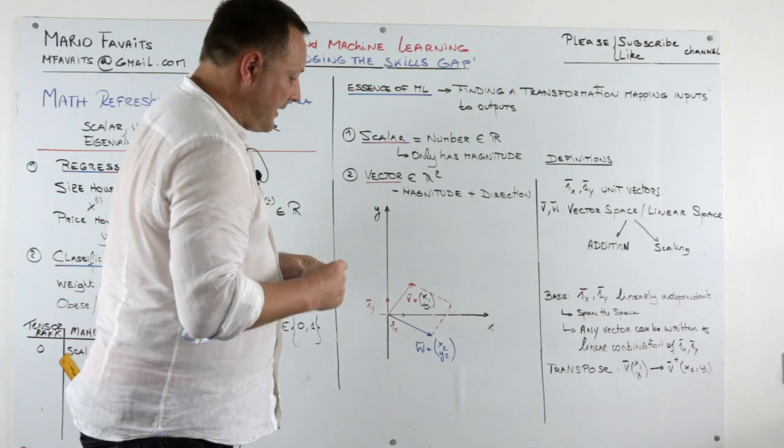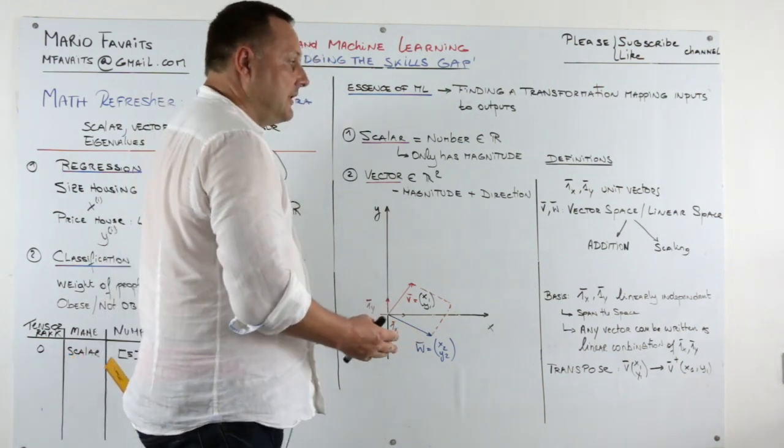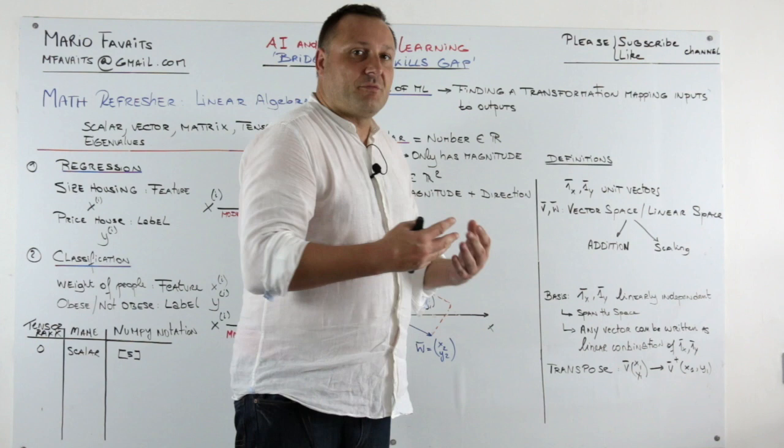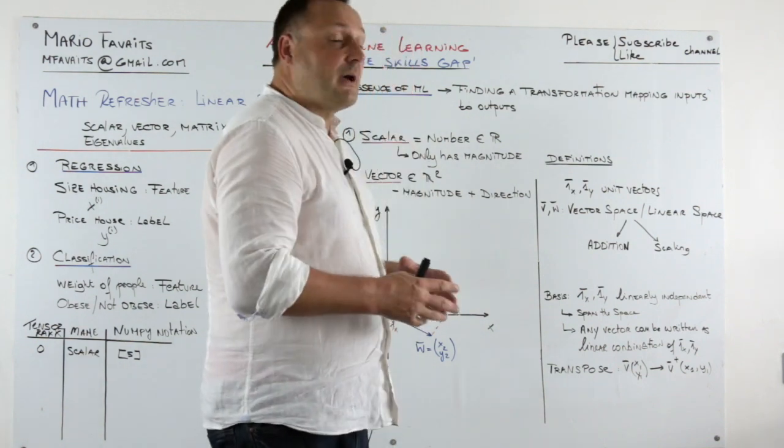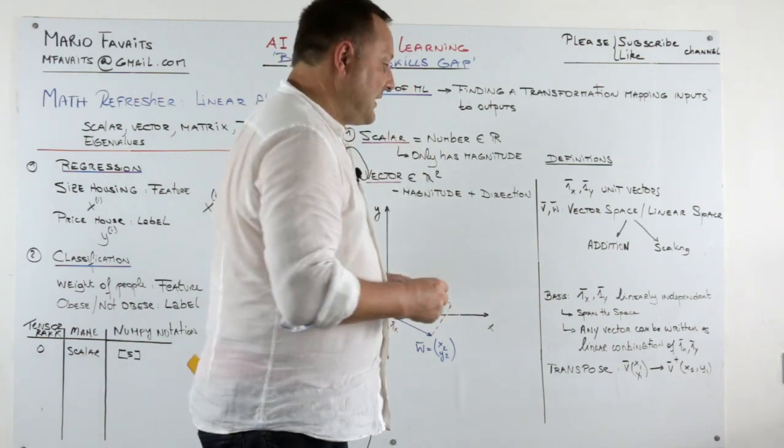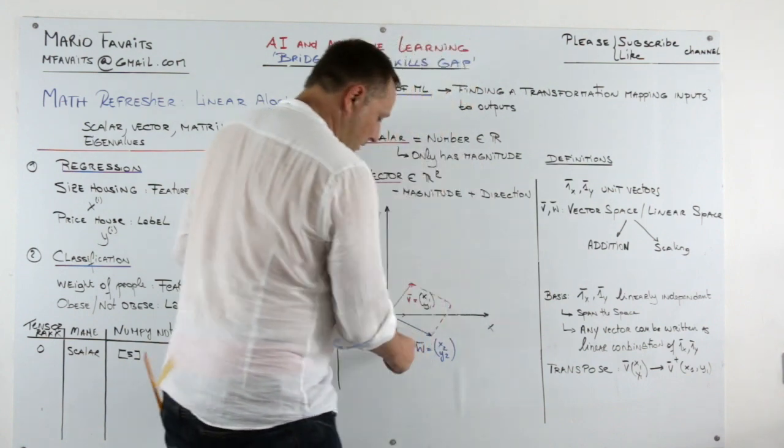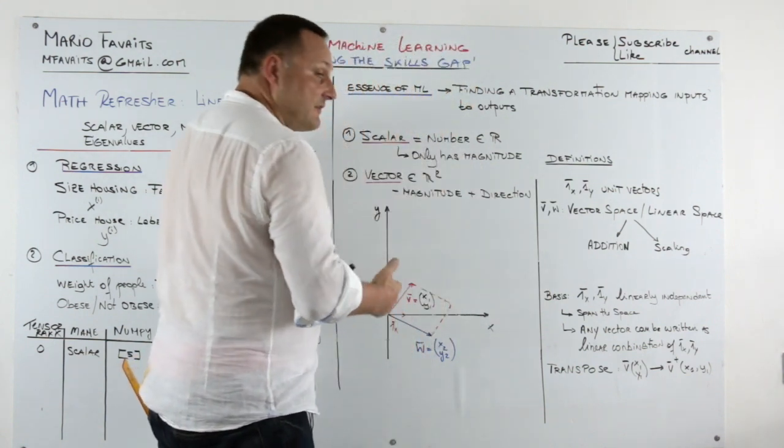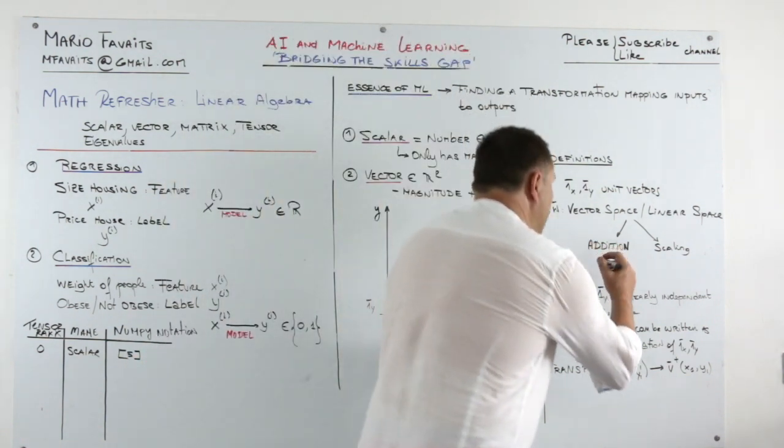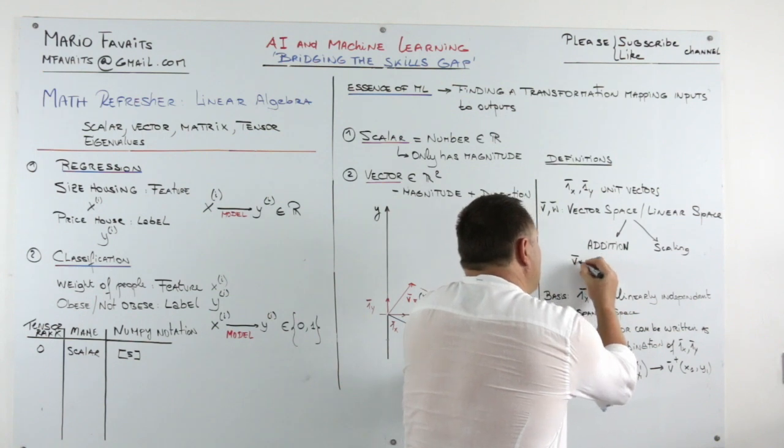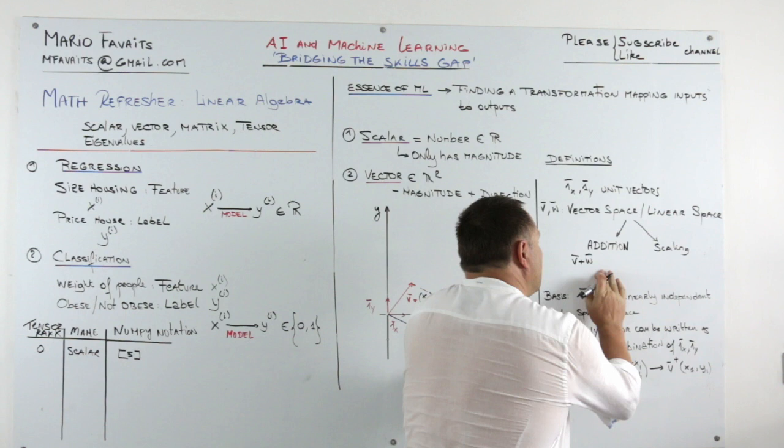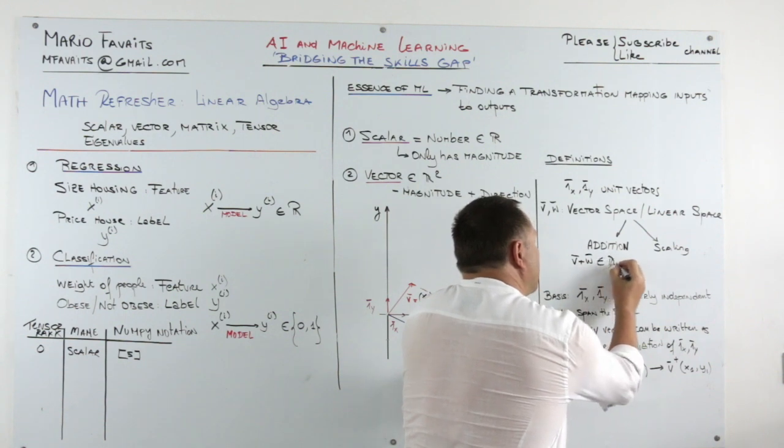Now, these vectors v and w. We call them a vector space. Or sometimes also called a linear space. If the addition of v and w is also an element of R squared. So that means that v plus w is also an element of R squared.